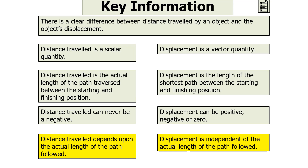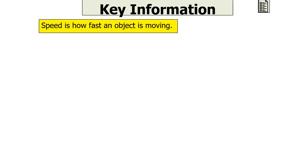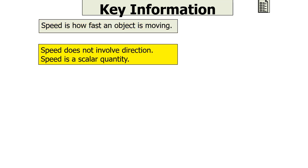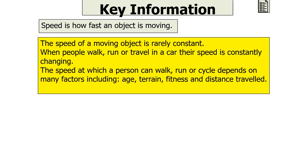Speed is how fast an object is moving. Speed does not involve direction — it is a scalar quantity. The speed of a moving object is rarely constant. When people walk, run or travel in a car, their speed is constantly changing. The speed at which a person can walk, run or cycle can depend on many factors like age, the terrain, fitness or the distance travelled.